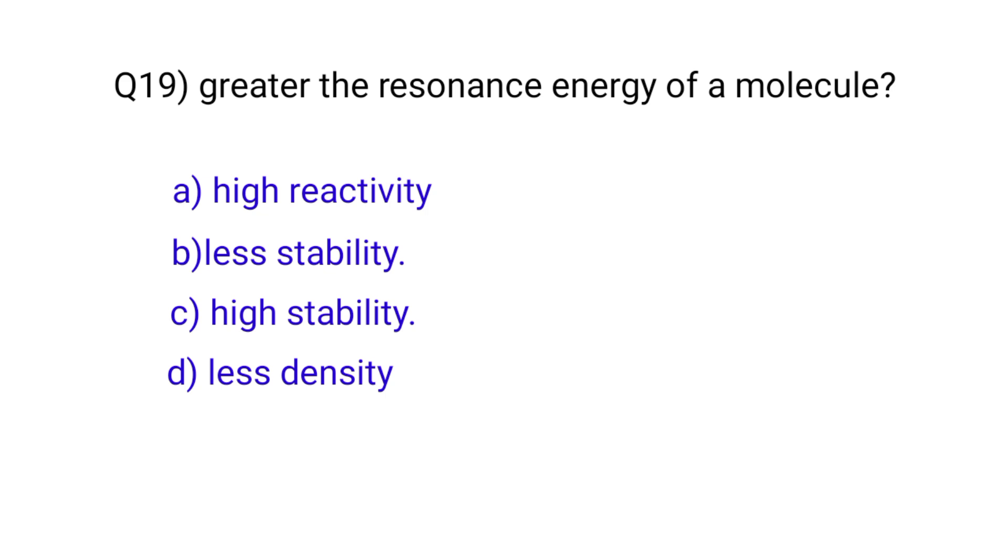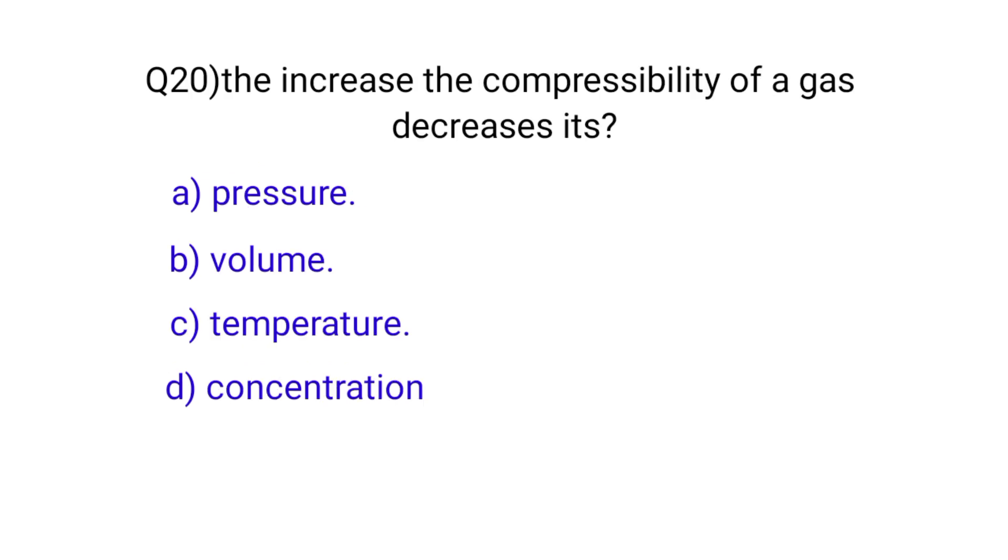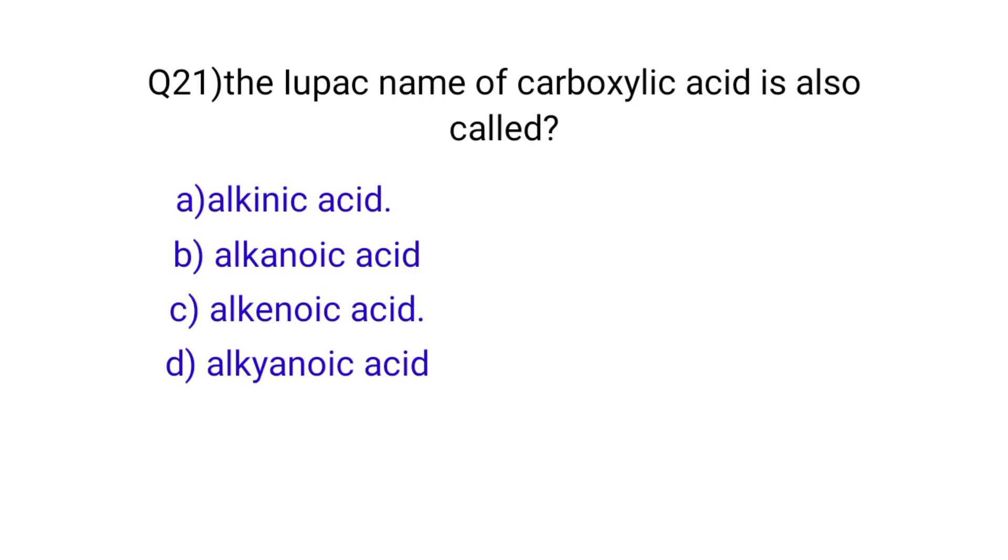Question number twenty: the increase in the compressibility of a gas decreases its? The correct option is C, temperature. Question number twenty-one: the IUPAC name of carboxylic acid is also called? The correct option is B, alkanoic acid.